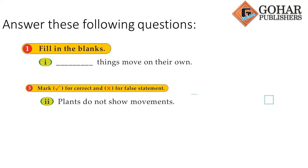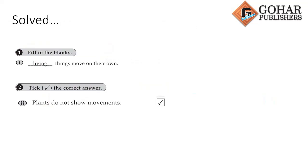The solution is given. The answer to fill in the blank is 'living' — living things move on their own. For tick the correct answer: plants do not show visible movement is correct, as plant movement is not so prominent that we can easily see it.